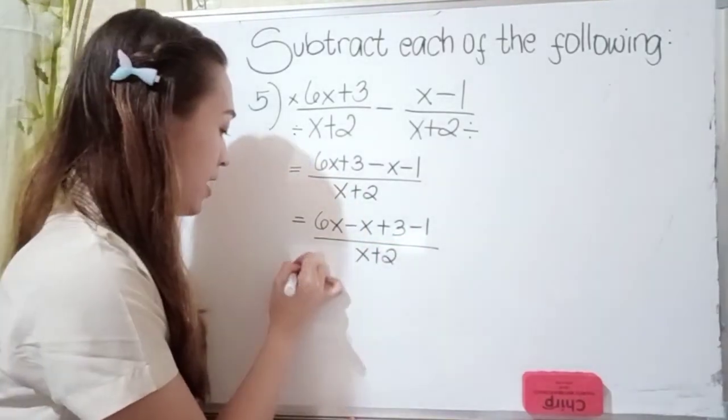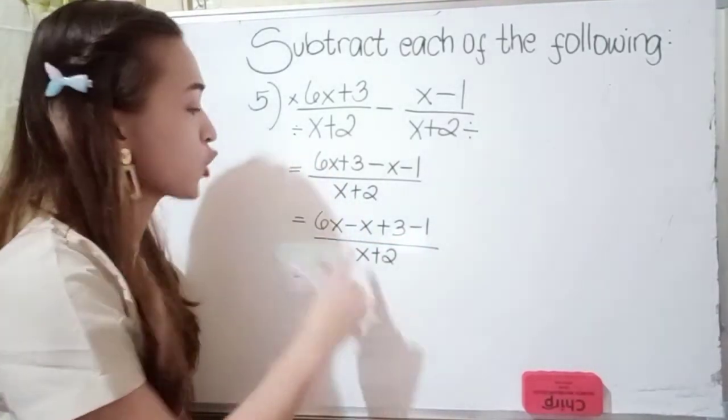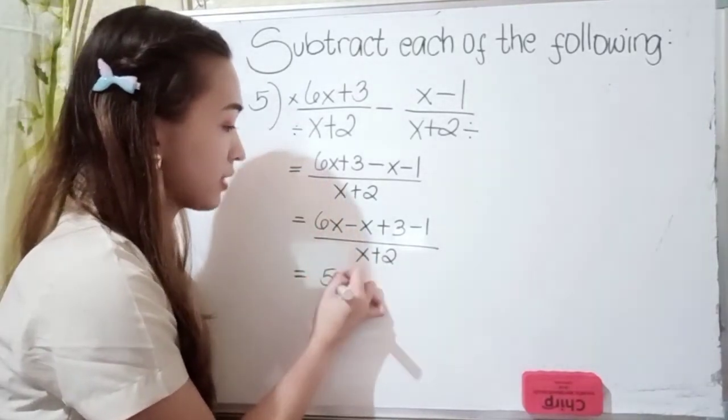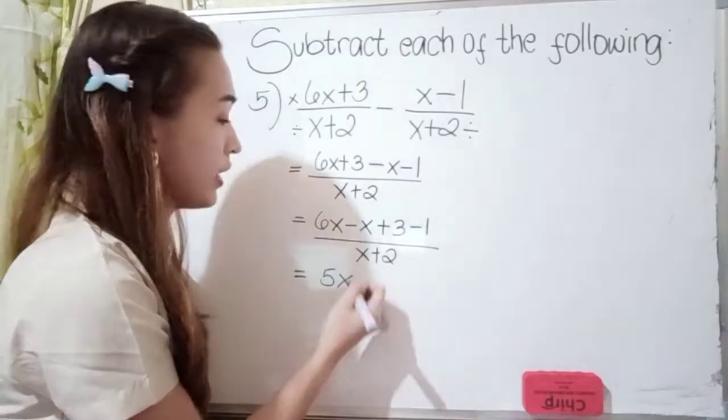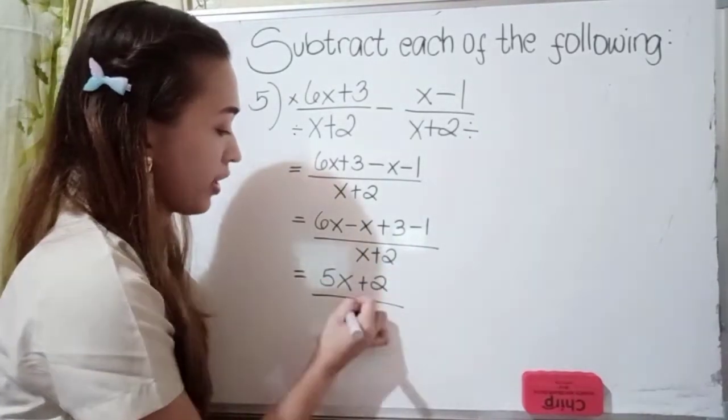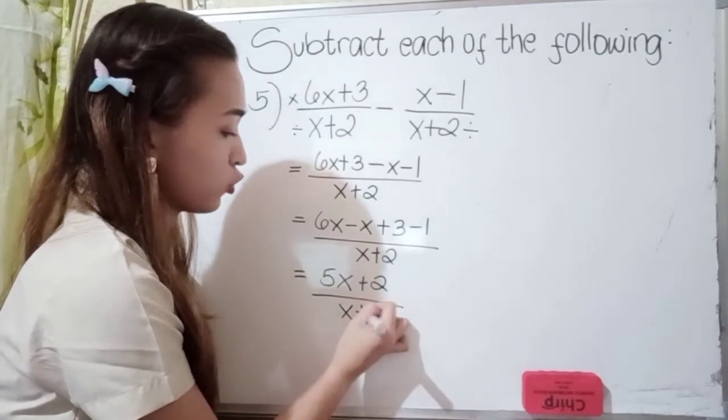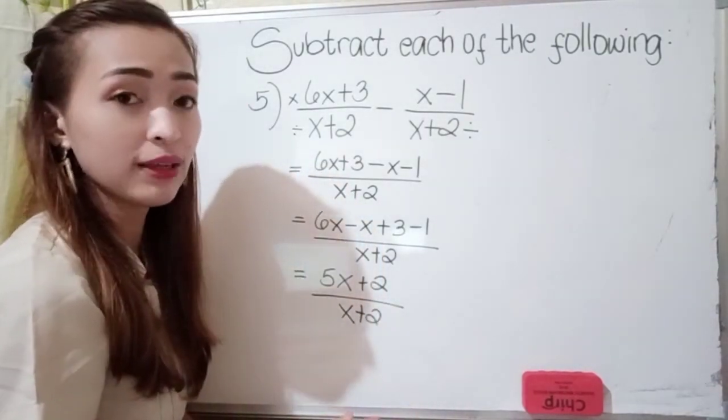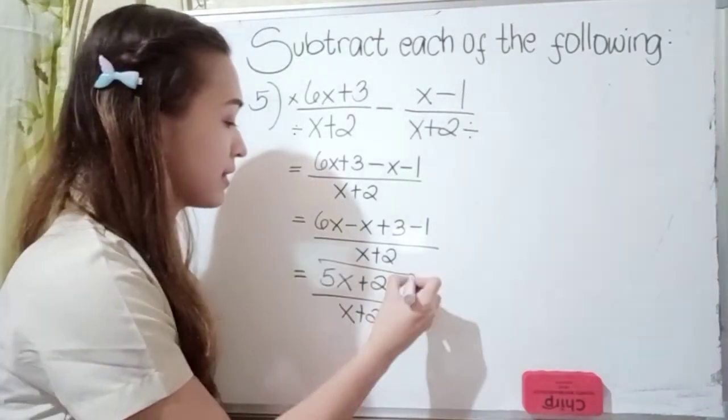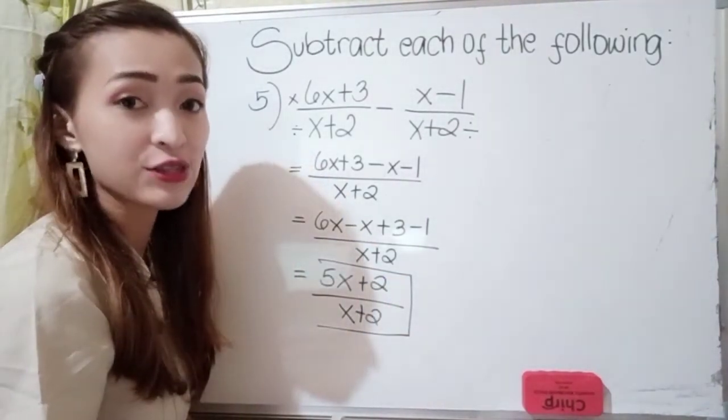Next is perform the operation. So 6x minus x is 5x, and then 3 minus 1 is positive 2 over x plus 2. Since we cannot simplify 5x plus 2 over x plus 2, so this is now our final answer.